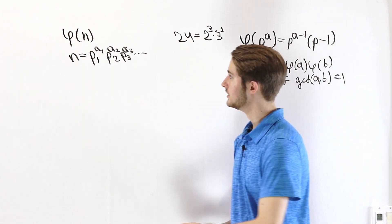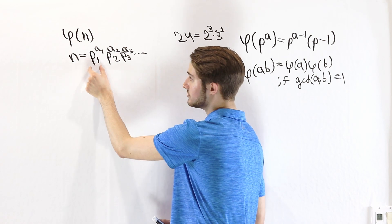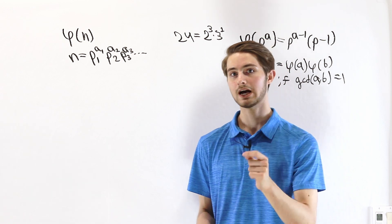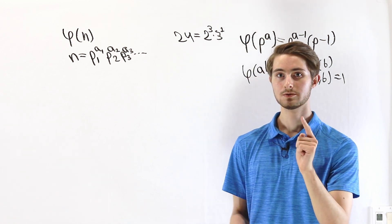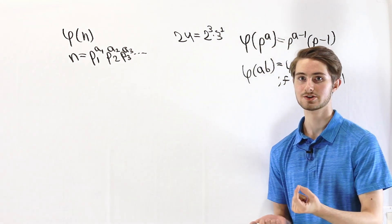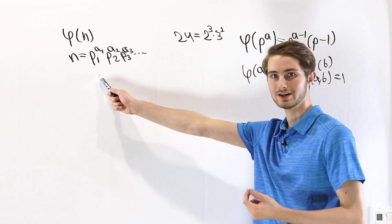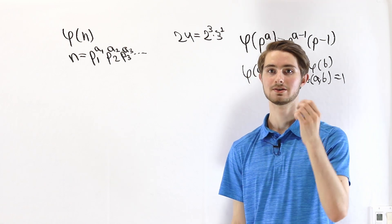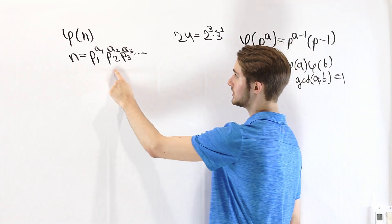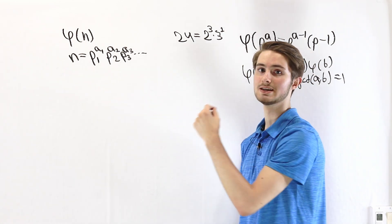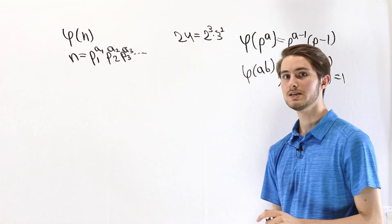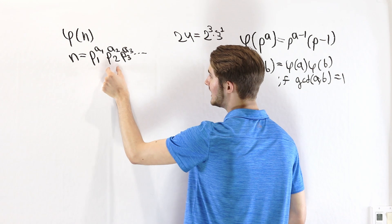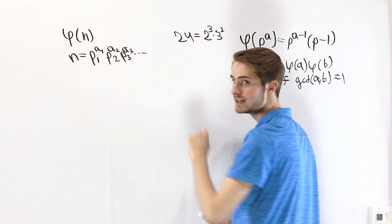Now from here, notice that each of these factors here, p1 to the a1, p2 to the a2, and so on, they're all powers of one prime number. Which means that all of their factors are all powers of that prime number. The only factor of p1 to the a1 is p1. And similarly, the only factor of this second part is p2. What that means is that because these primes are distinct, each of these factors is co-prime to the other factors.